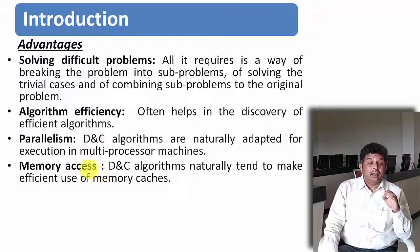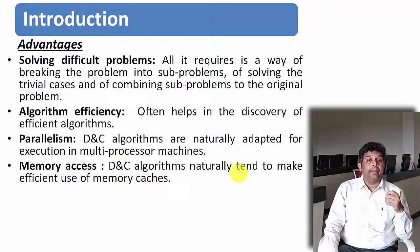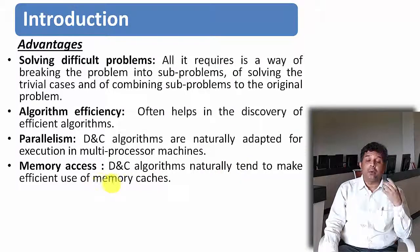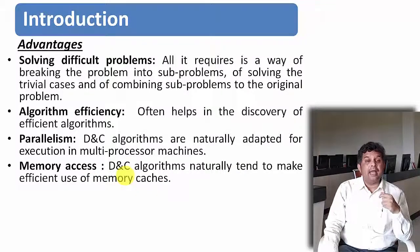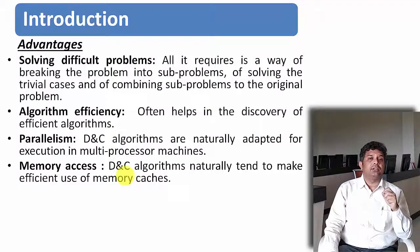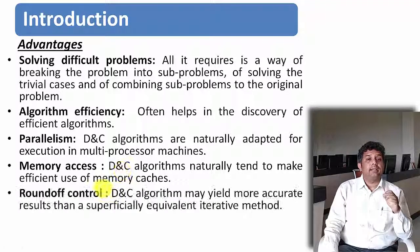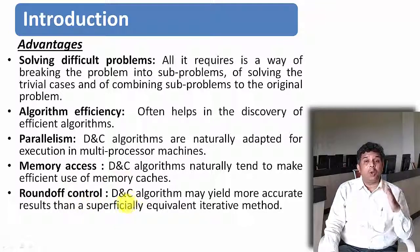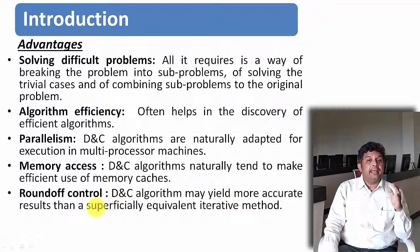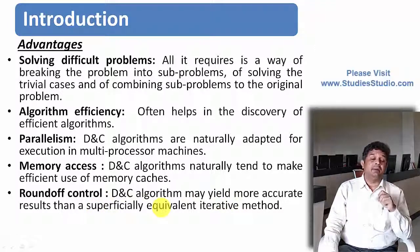The fourth advantage is memory access — divide and conquer algorithms naturally tend to make efficient use of memory cache because we use recursion, and in recursion memory access is very efficient. The fifth advantage is round-off control — divide and conquer may get more accurate results than any iterative method.